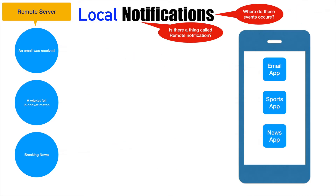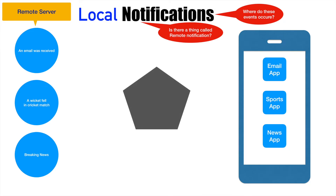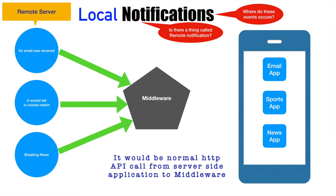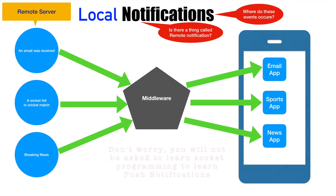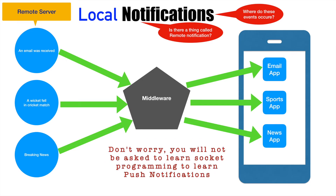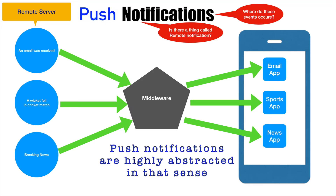That is where another new approach is used, wherein you use another system which sits in the middle between the remote server and the device. We are going to call it middleware, because it is the man in the middle between the remote server application and the device. Whenever an event happens, the remote server applications send this information to the middleware, and the middleware will then pass it on to the mobile application. In this way, you are basically pushing the message from the remote server to the mobile application on the device, and that is why this is called push notification.